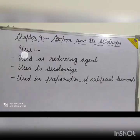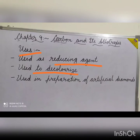Uses of sugar charcoal: it is used as a reducing agent to extract metals from their respective oxides. It is also used to decolourise coloured solutions. It is used in the preparation of artificial diamonds when heated at a temperature of above 3000 to 3500 degrees Celsius.